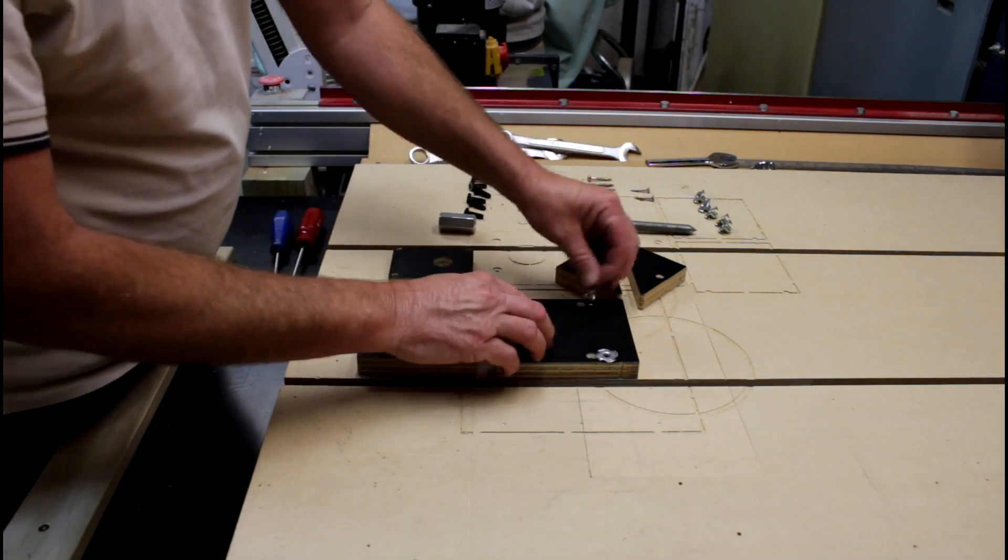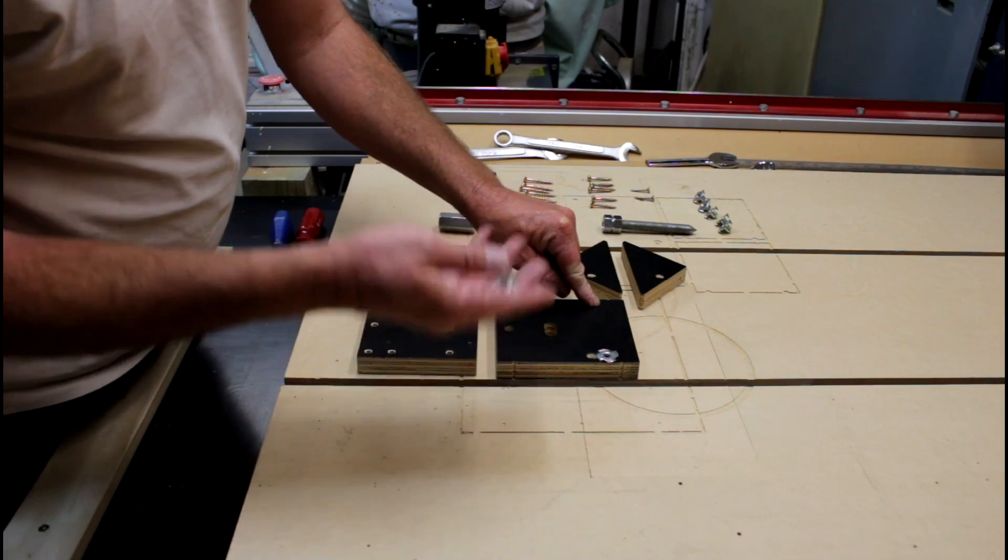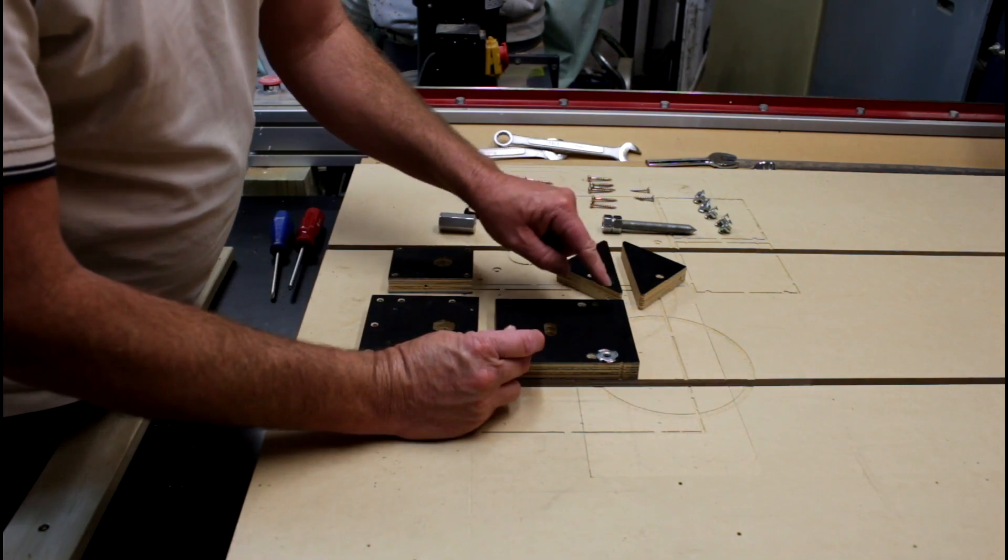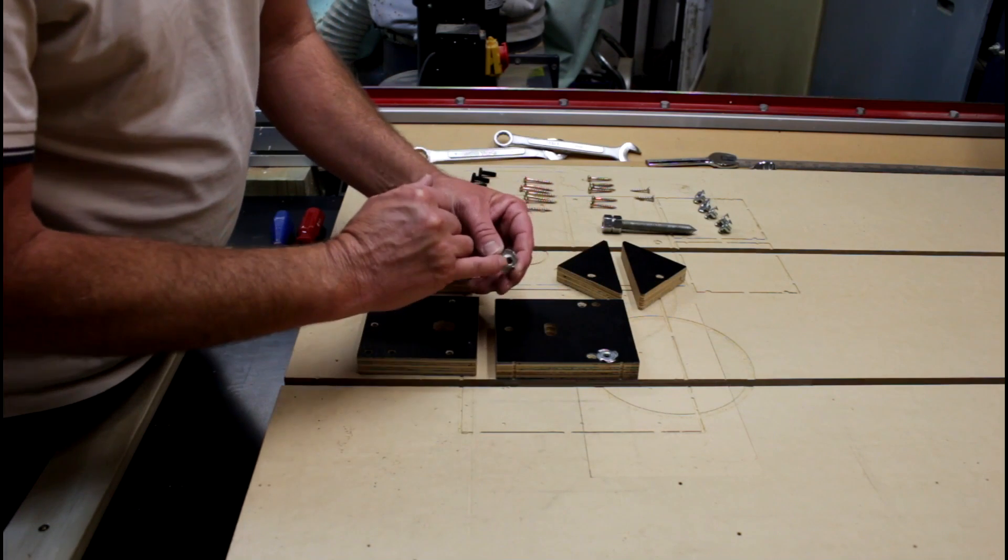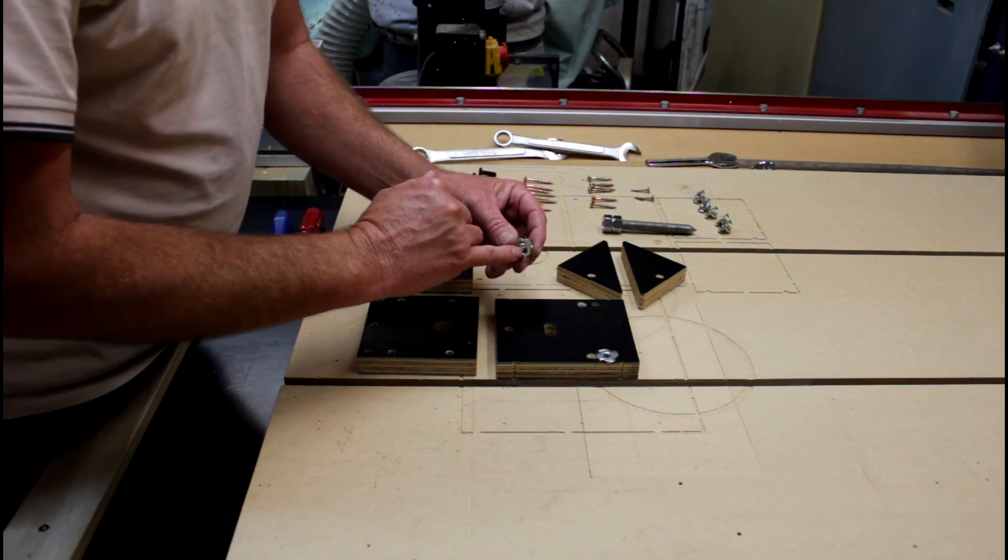And you'll find that the holes here are not quite big enough for these T-nuts to go in. It will be a 6mm hole, and it requires about a 7.5mm hole for this here to fit in.